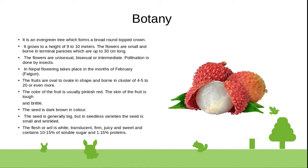The fruits are oval to obovate in shape and borne in clusters of 4 to 5 to 20 or even more. The color of the fruit is usually pinkish-red. The skin of the fruit is tough and brittle. The seed is dark brown in color. In seedless varieties the seed is small and wrinkled. The aril is white, translucent, firm, juicy, and sweet, containing 10 to 15 percent soluble sugar and 1 to 1.15 percent protein.